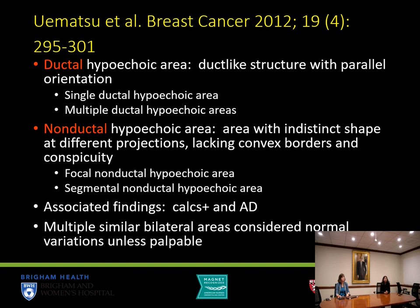Many years later, Iematsu et al. in the Breast Cancer Journal in 2012 described two different areas of non-mass findings: either ductal or non-ductal. Ductal was described as duct-like areas with parallel orientation, either single or multiple ductal hypoechoic areas. Non-ductal hypoechoic area had an indistinct shape at different projections and lacked convex borders. Patterns could be focal or segmental, with associated calcifications and distortion. Multiple similar bilateral areas were considered normal unless palpable.